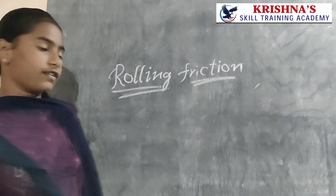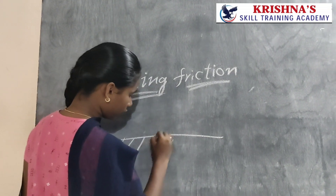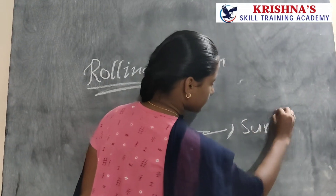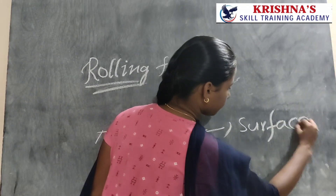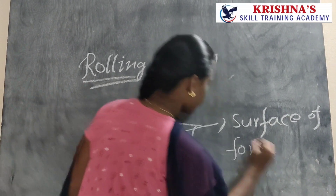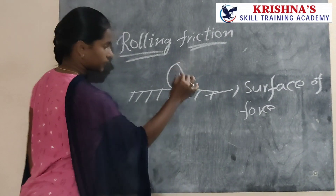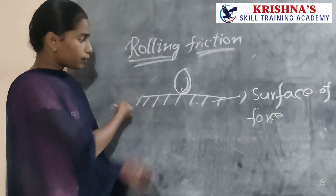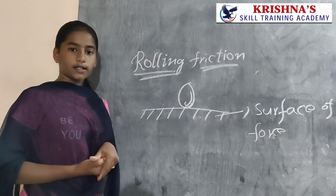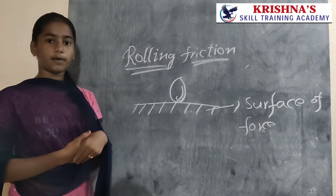Let us know an example for rolling friction. I am going to draw a surface of the floor. This is the surface of the floor. Now I am going to draw one ball on the surface. If I push the ball, this ball will roll on the floor. The rolling of the ball is called rolling friction. Thanks for giving this wonderful opportunity to explain about rolling friction.